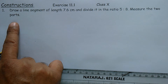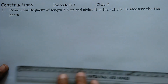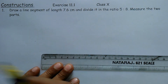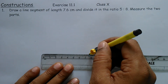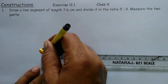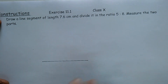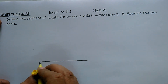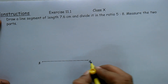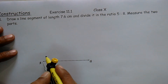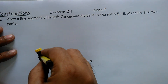To solve this question, draw a line segment of length 7.6 cm. Here it is 7.6 cm and the name of this line is AB. Take an acute angle at A — an acute angle of any degree.